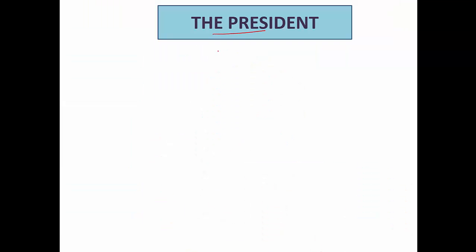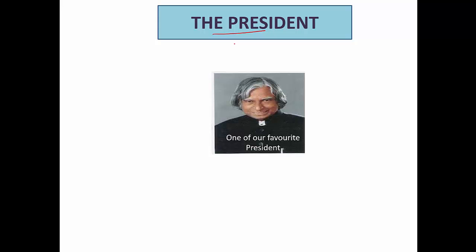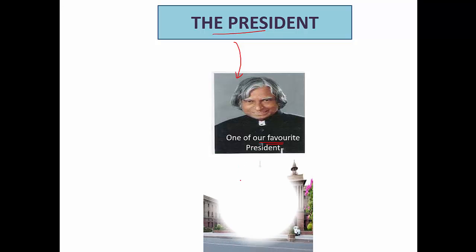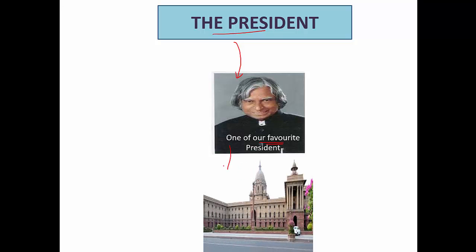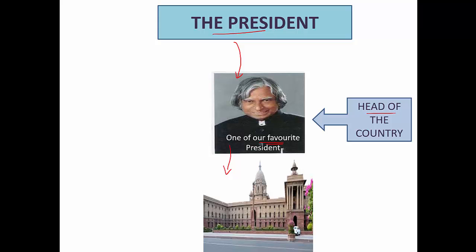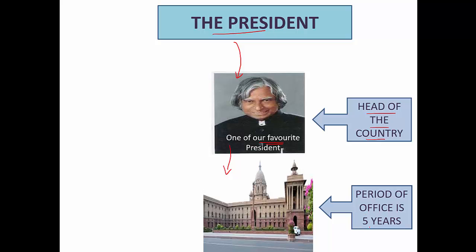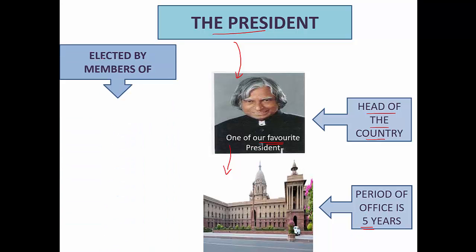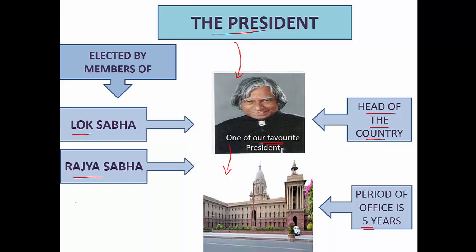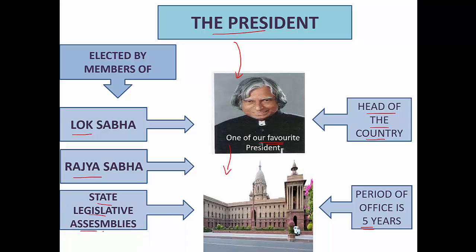The President of India functions from the Rashtrapati Bhavan in New Delhi. The President is the head of the country and the period of office is five years. The members who can elect the President are the members of the Lok Sabha, the members of the Rajya Sabha, and the state legislative assemblies.